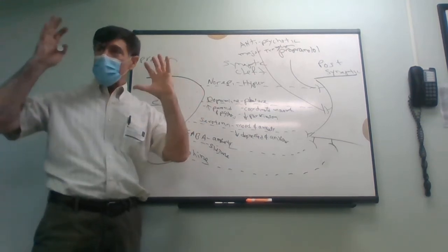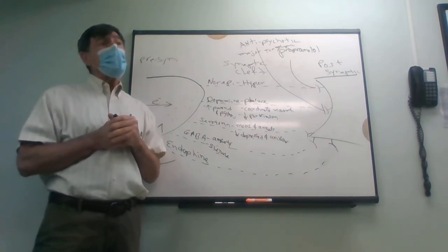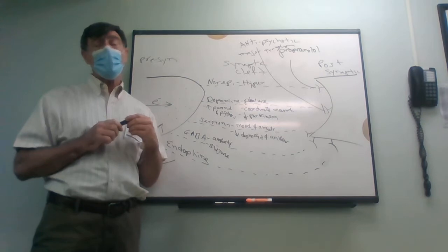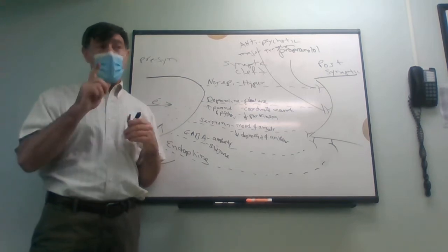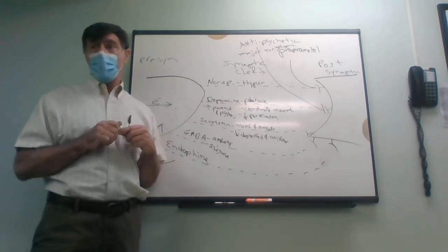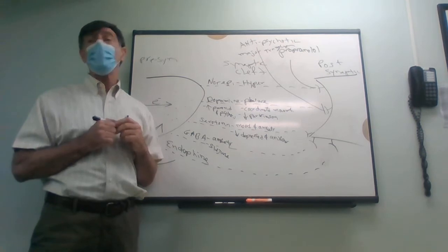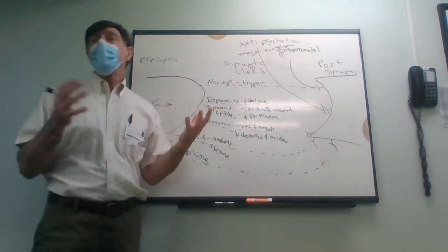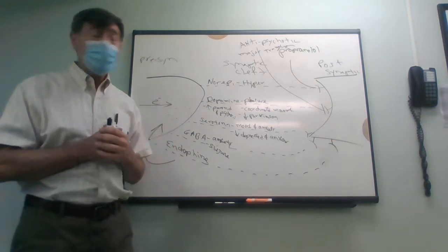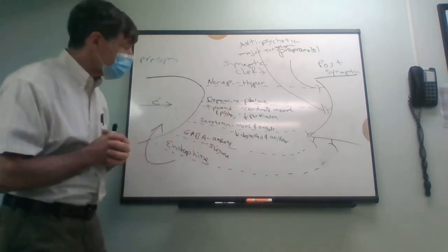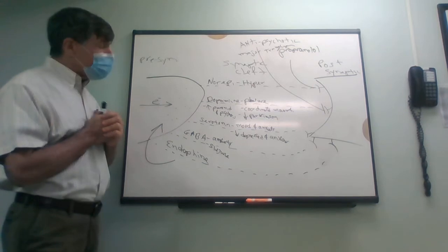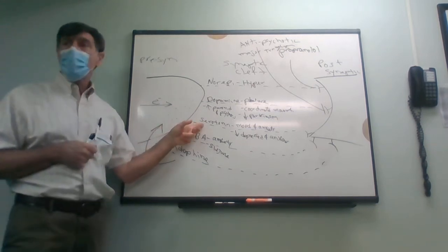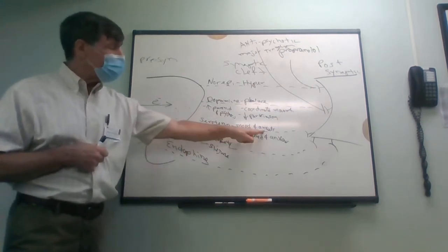Mental disorders shorten people's lives. When we get medicines that correct neurotransmitter imbalances, we literally extend their lives. The average life expectancy for a drug addict is 40 years old — probably even lower now with the heroin epidemic, maybe 35 — because your judgment is off and you can fall asleep and stop breathing.